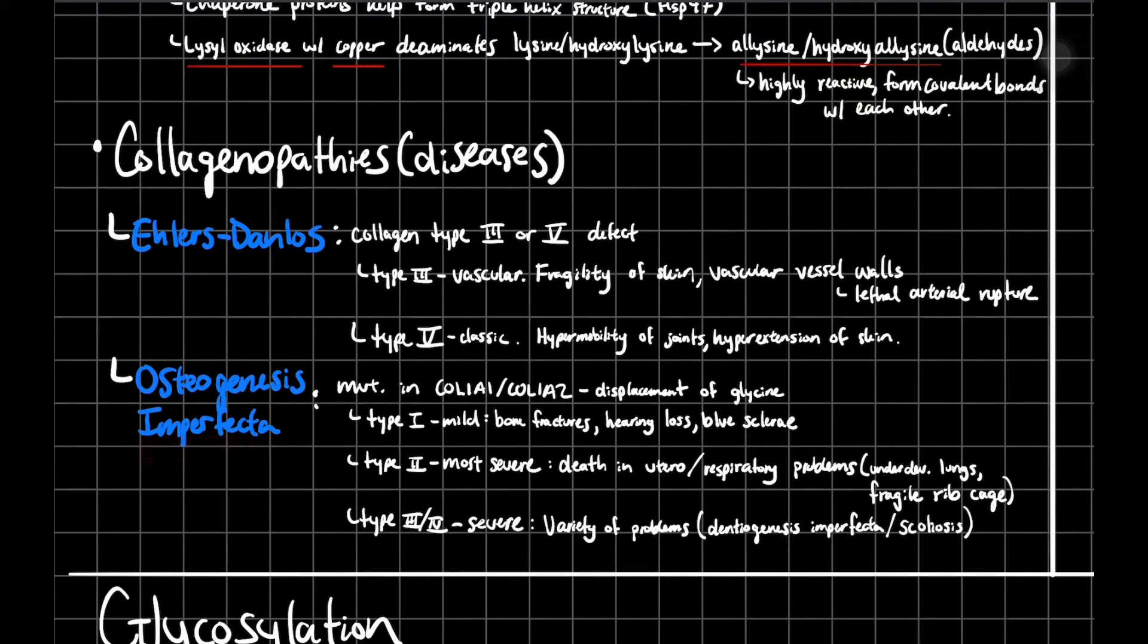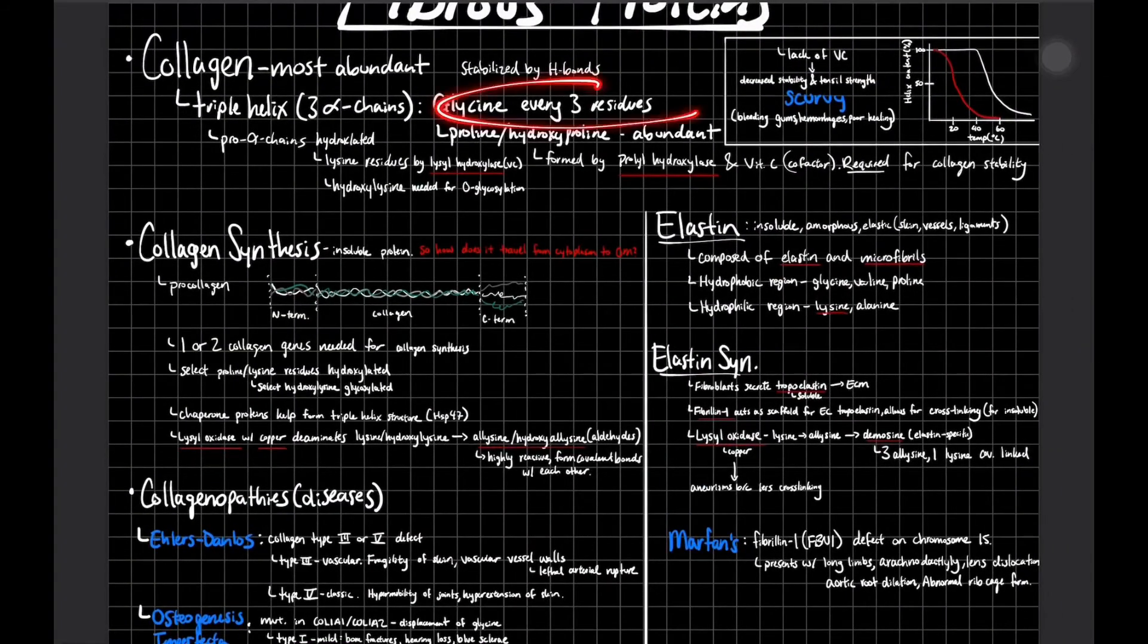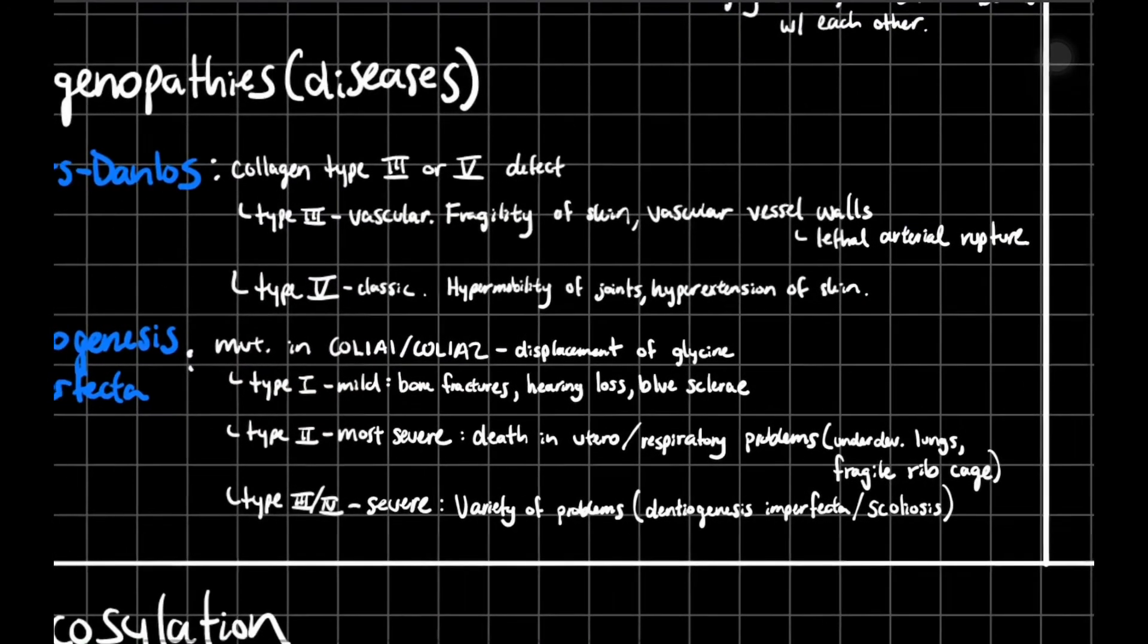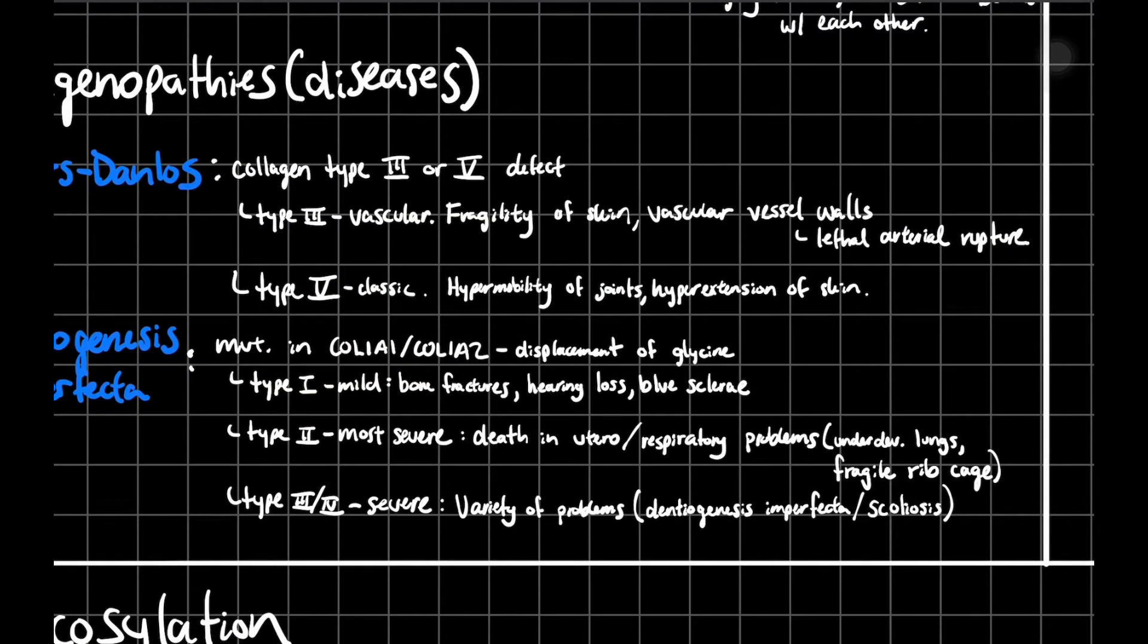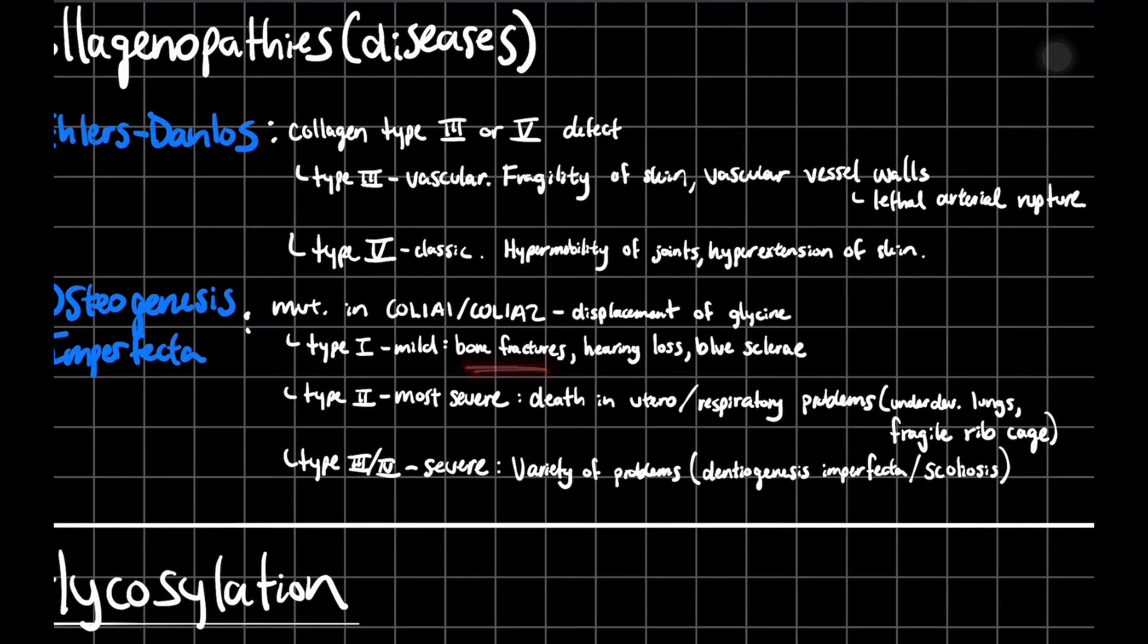Then you're going to have Osteogenesis imperfecta. That's going to be a mutation in your Col1A1 or Col1A2 gene, and that's going to lead to a displacement of glycine. Remember, glycine is extremely important - it happens in every three residues. So if you don't have that, obviously you're going to have a problem with your collagen fibers, which are extremely important. If we look at type 1, it's going to be presenting with mild symptoms, such as bone fractures. When you're younger, you're going to have less bone fractures when you're older. It can present with hearing loss and also blue sclera. So the white part of your eye, that part's actually kind of blue. Those are more mild symptoms. Obviously you're not going to die or anything, but it's still a problem that you need to see a doctor for.